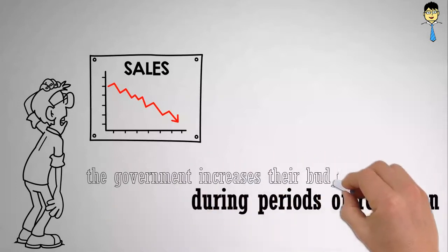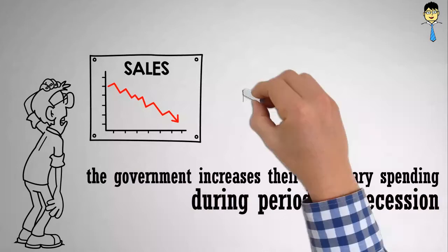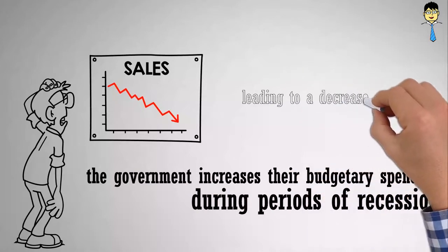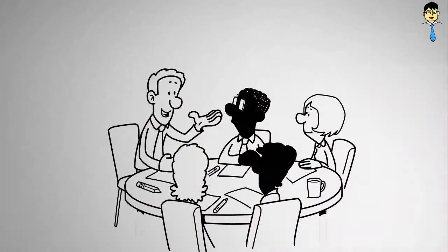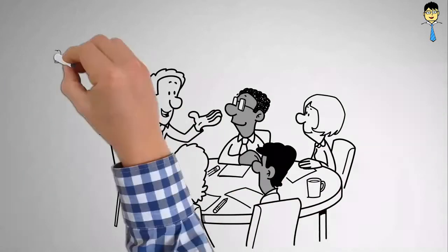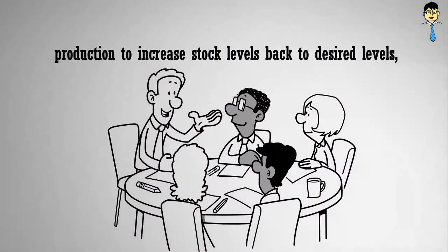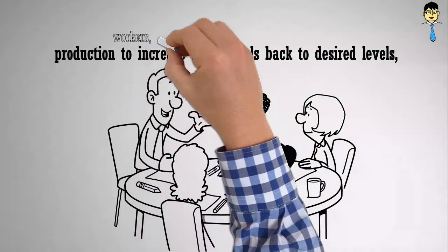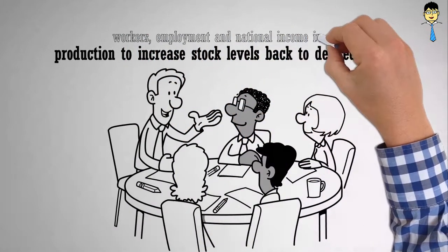Assuming that the government increases their budgetary spending during a period of recession, this will increase the level of aggregate expenditure, leading to a decrease in stocks. As firms increase their production to increase stock levels back to desired levels, they hire more workers, and employment and national income increases.